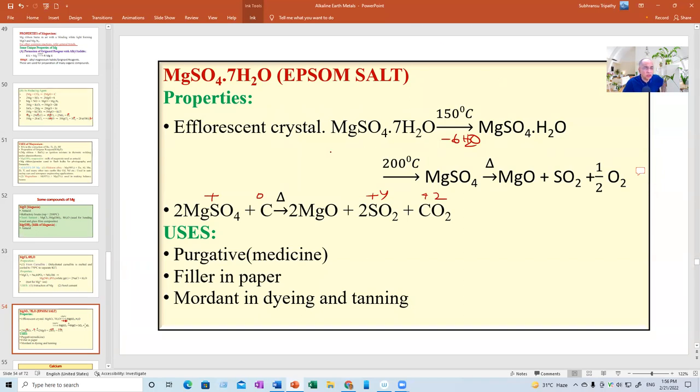Earlier magnesium sulfate was used as purgative for easy motion. Nowadays nobody bothers about magnesium sulfate. Filler in paper industry. A lot of other ingredients are added, one of them is magnesium sulfate. Mordant in dyeing and tanning. Before dyeing means to give color, and leather tanning, first it is soaked with magnesium sulfate and some other mordants so that it becomes a little soft and ready to absorb the dye or go for tanning.